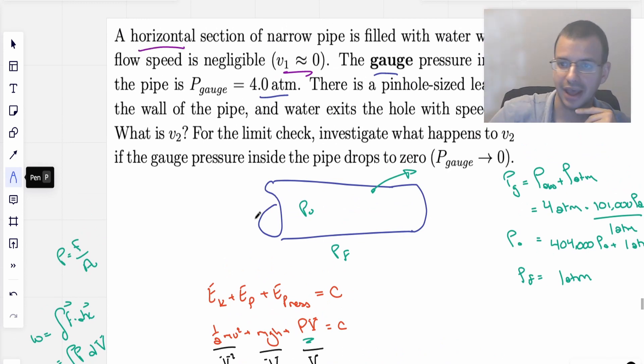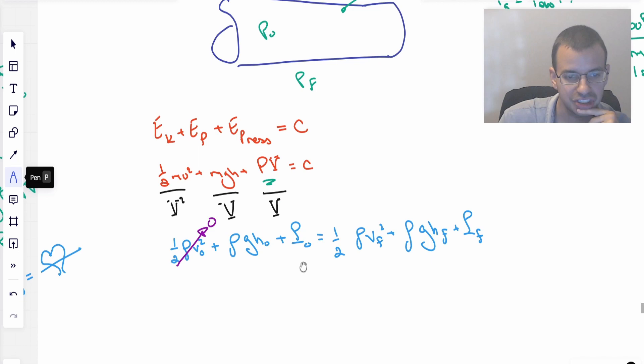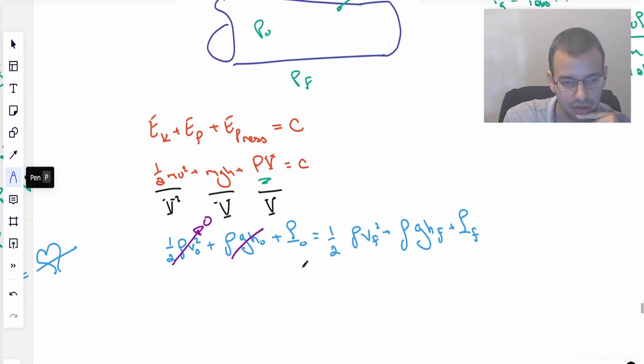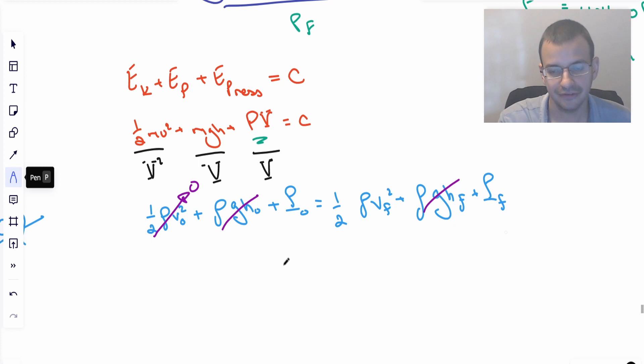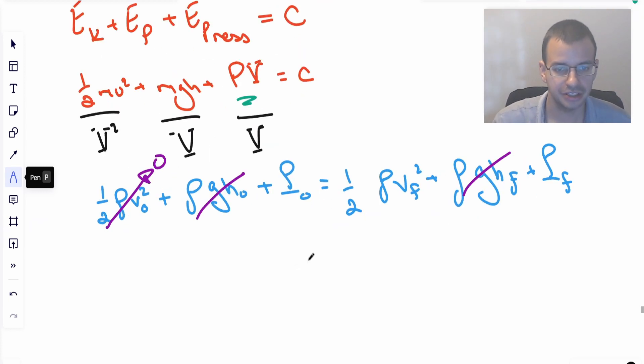They also say specifically that is a horizontal pipe. Horizontal meaning it doesn't go up or down. Therefore, its change in height is zero. Therefore, the gravity, the energy due to potential energy due to gravity is the same on both sides. Therefore, you can cancel it out.